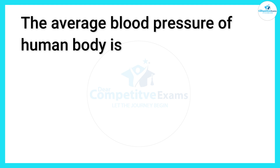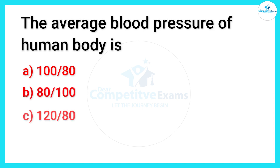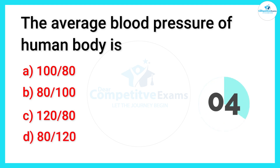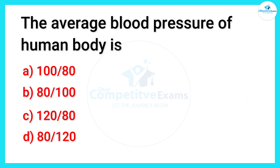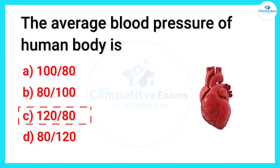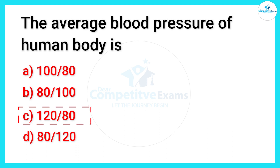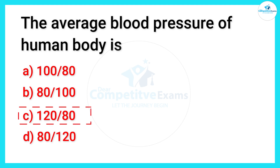What is the average blood pressure in the human body? The options are: 100/80, 80/100, 120/80, or 80/120. Friends, the correct answer is 120/80. Systolic pressure is around 120 mmHg and diastolic pressure should be around 80 mmHg.